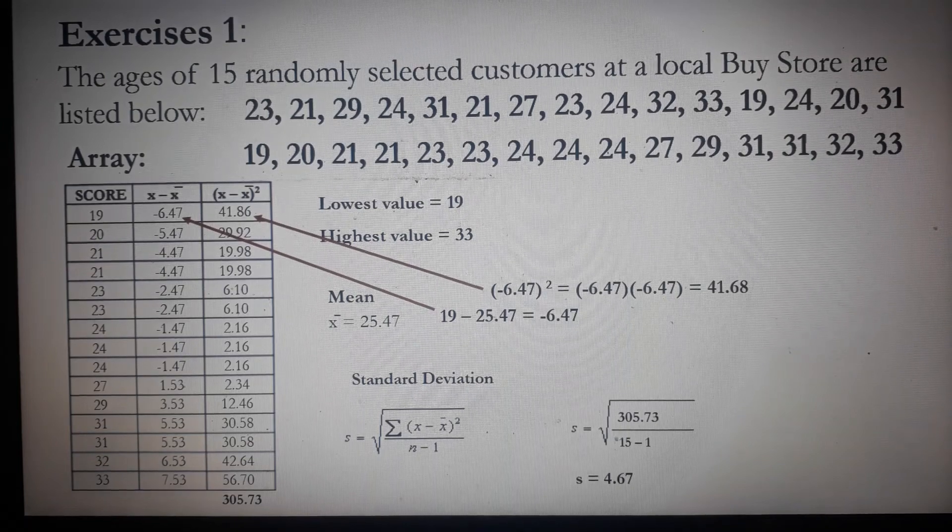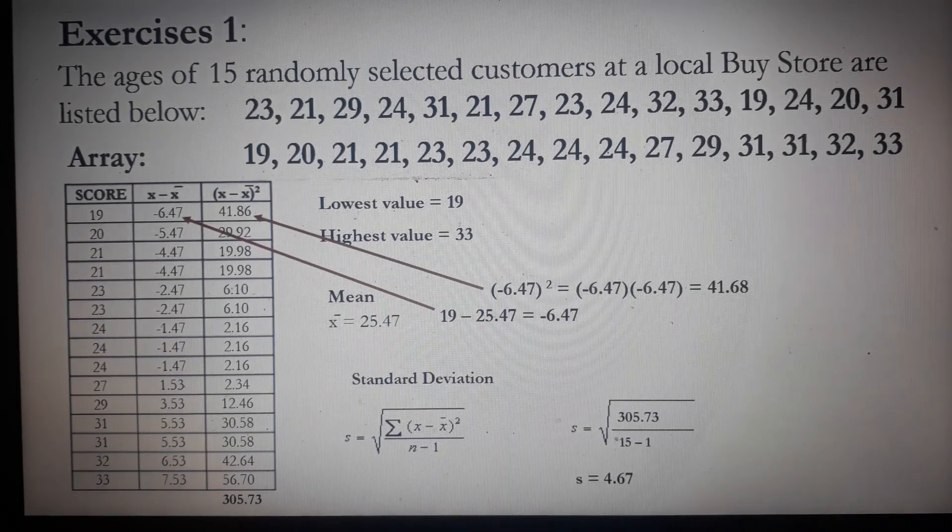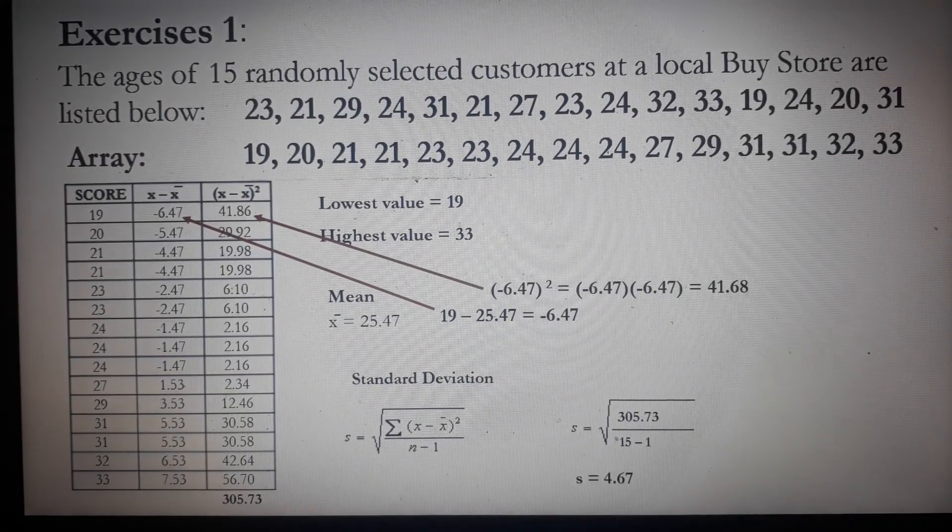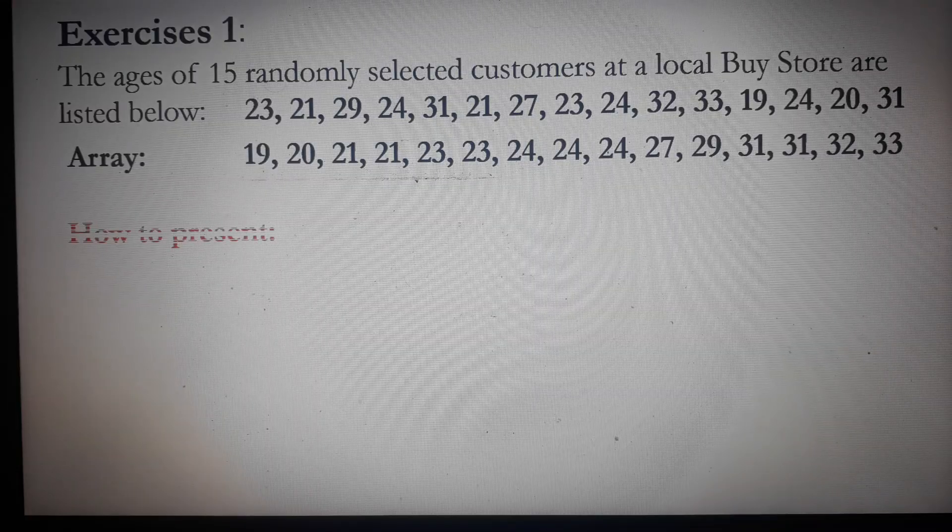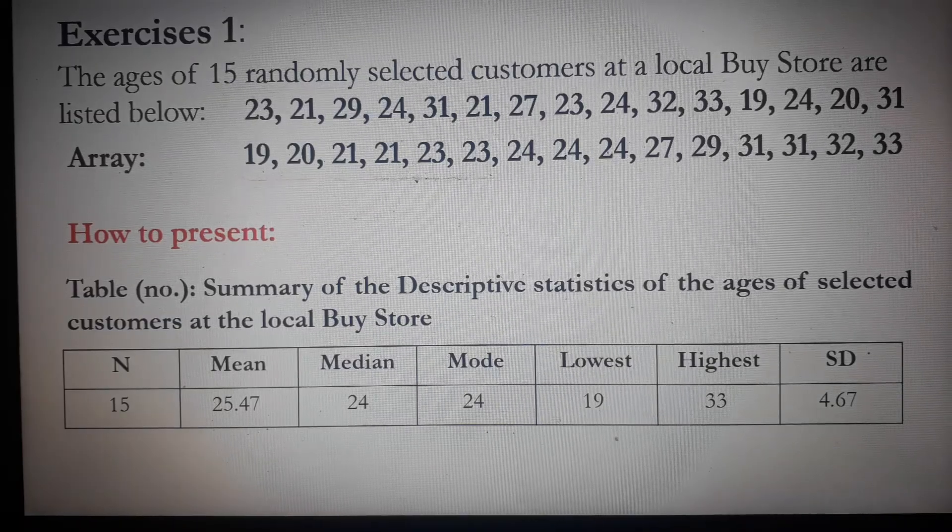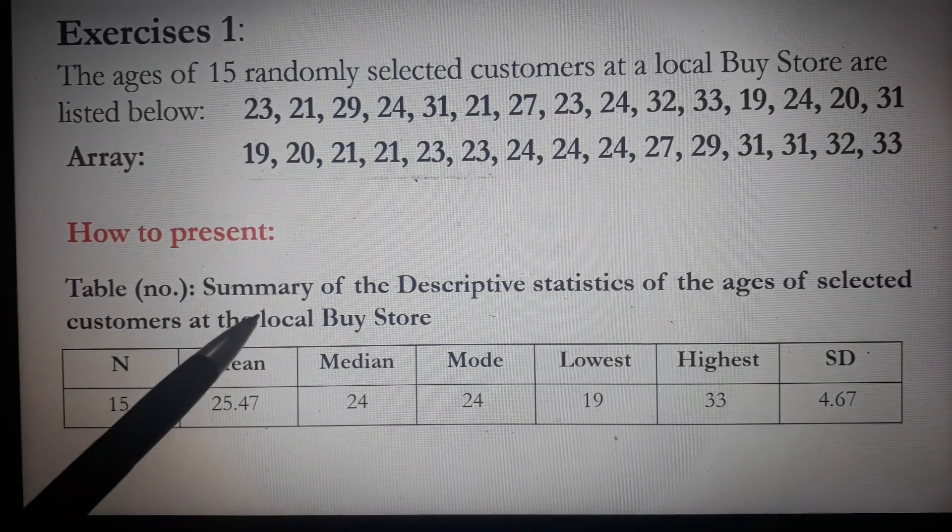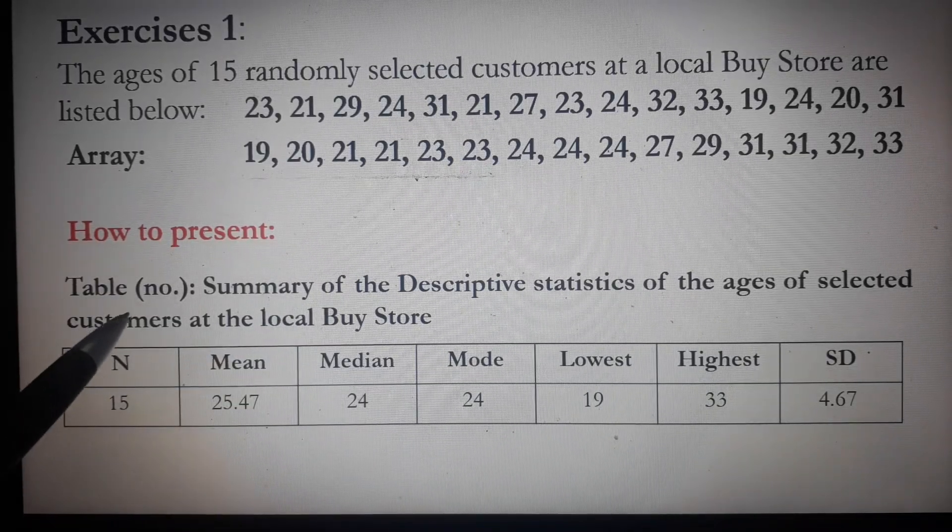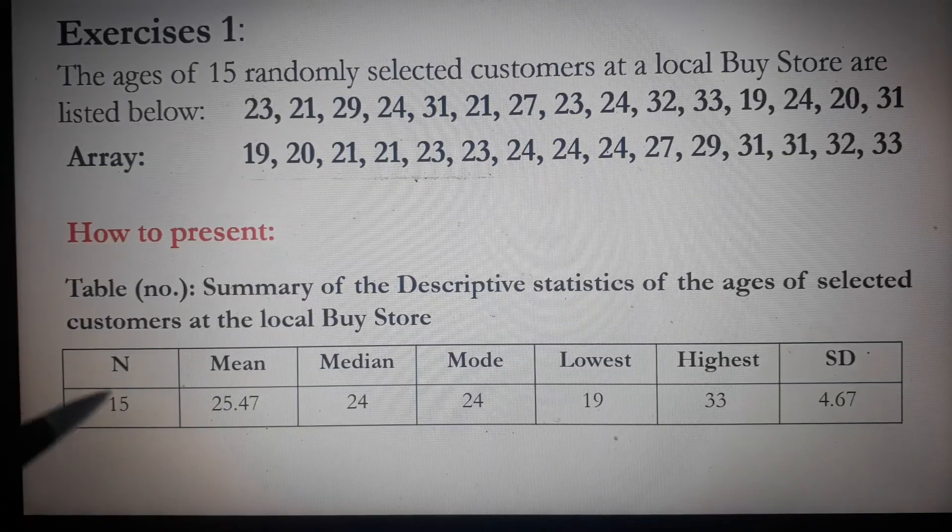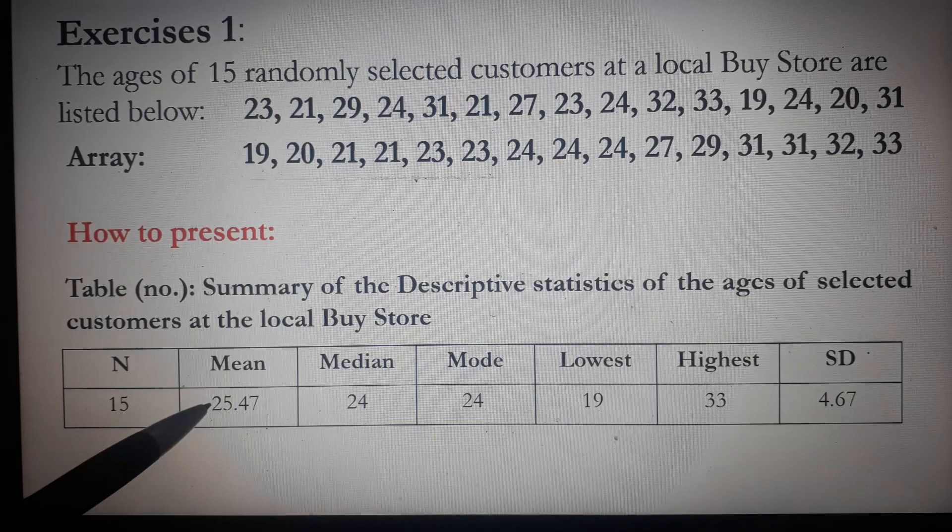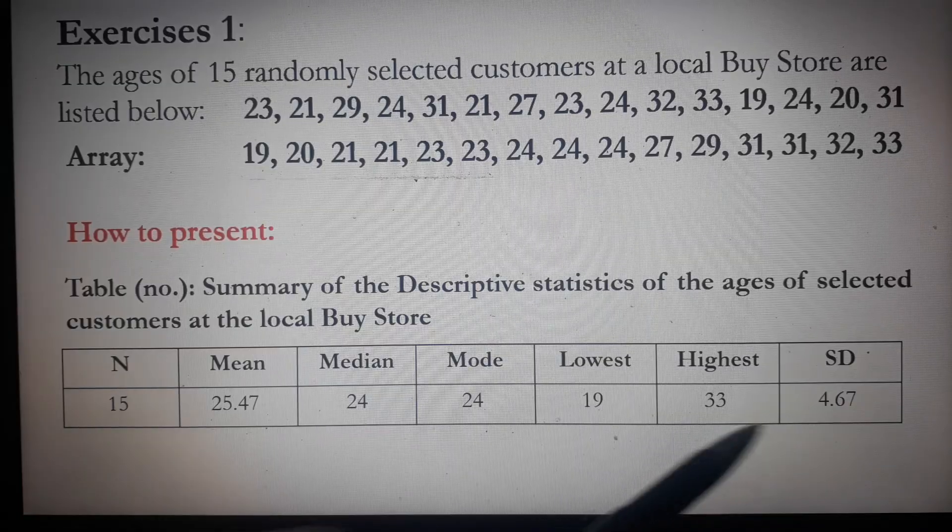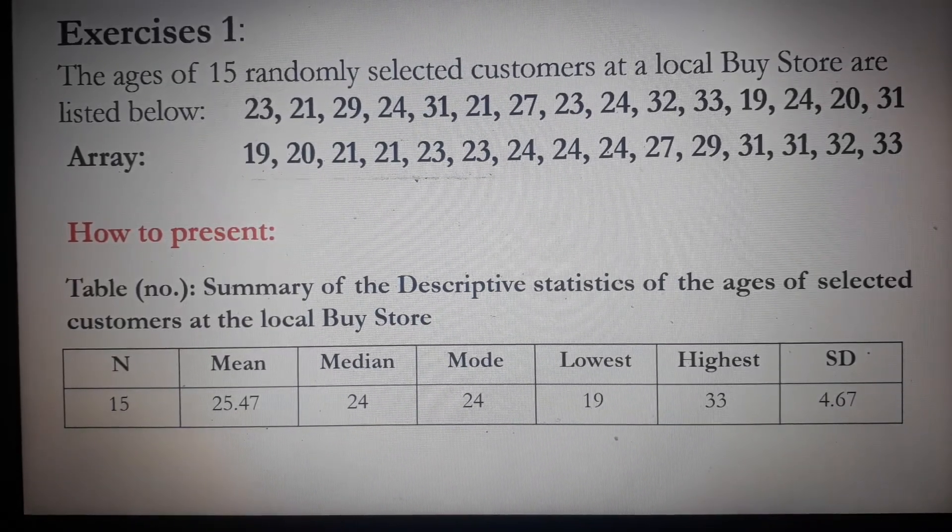Now, usually, the calculations are placed in the appendix. The question is, how can we present the results? We can present the result using a table. The title I placed here is 'Summary of the Descriptive Statistics of the Ages of Selected Customers at the Local Buy Store.' It includes N (15), mean (25.47), median (24), mode (24), lowest (19), highest (33), and standard deviation (4.67).